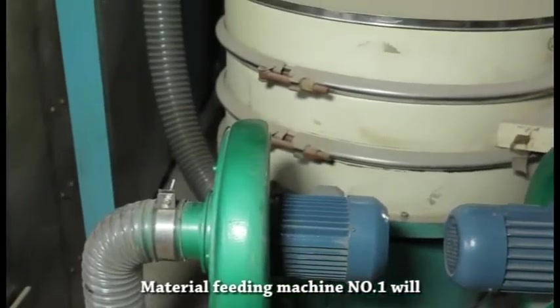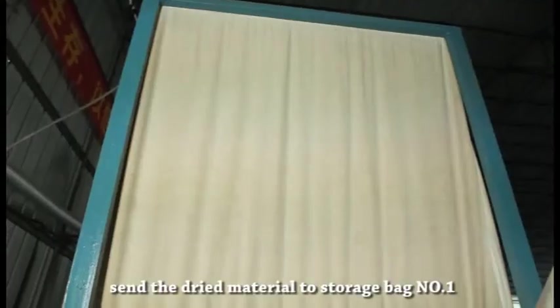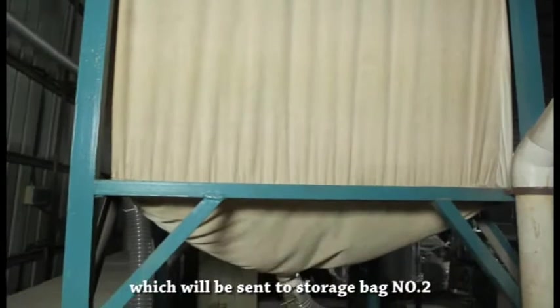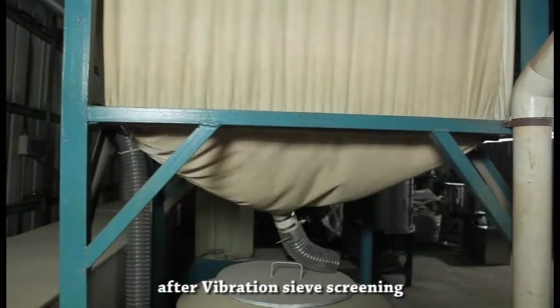Material feeding machine number one sends the dry material to storage bag number one, which is then sent to storage bag number two after vibration sieve screening.